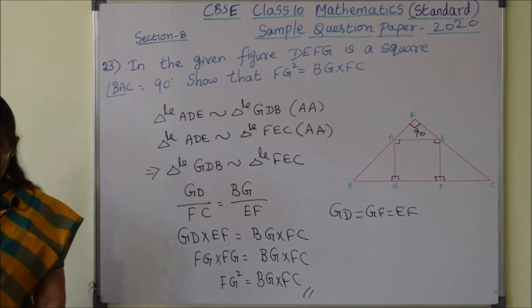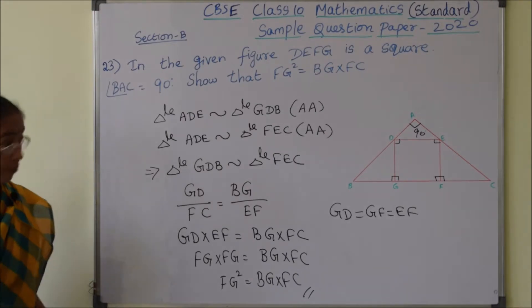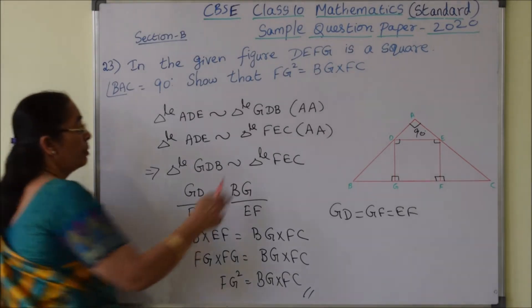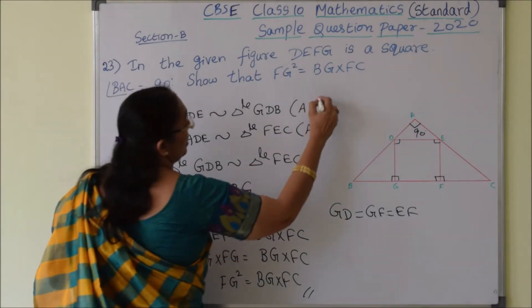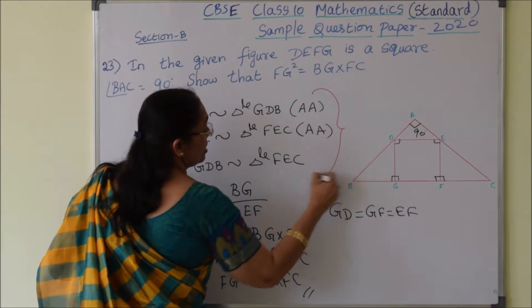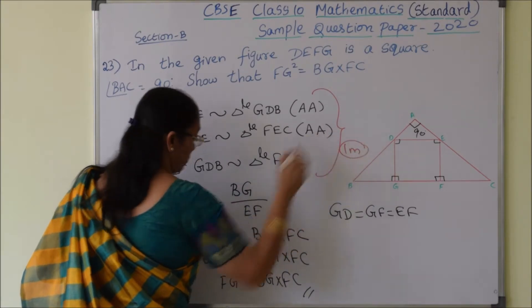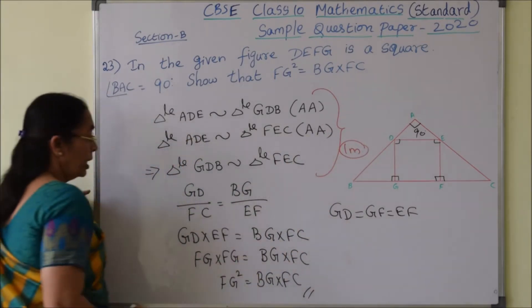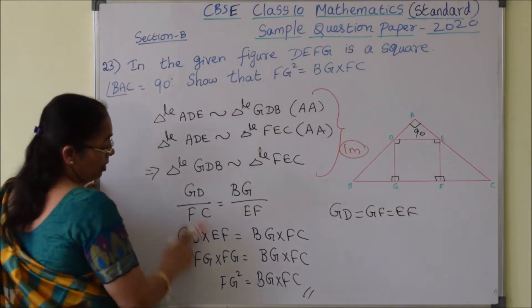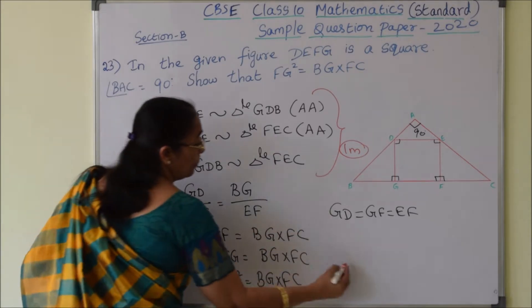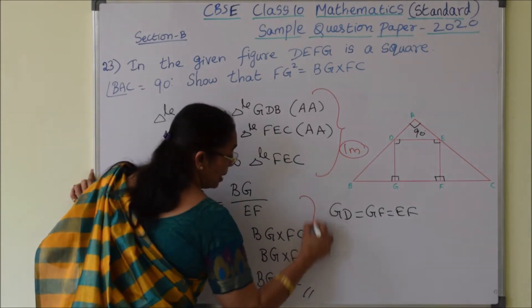Marking scheme: for writing the similarity of the three triangle pairs, that is one mark, and again for writing the ratio and completing the proof, that is one mark.